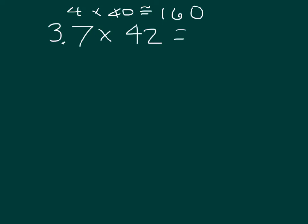Now, for our exact answer, what we'll do is take a look at 3.7, that 3 and 7 tenths, and we'll think about how many tenths it's worth. 3.7, or 3 and 7 tenths, is worth 37 tenths. So really we have 37 tenths times 42.